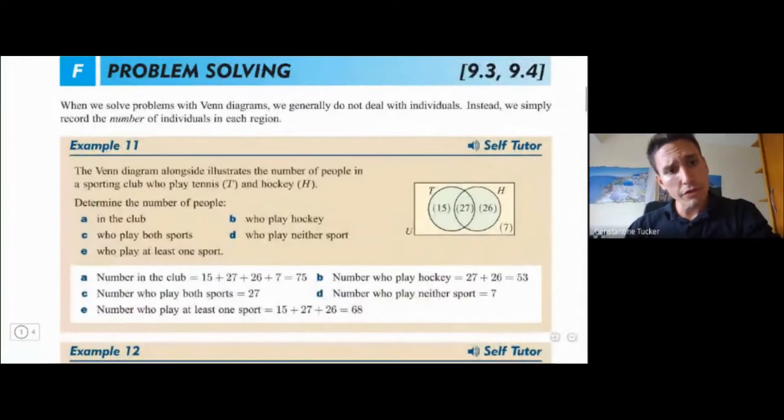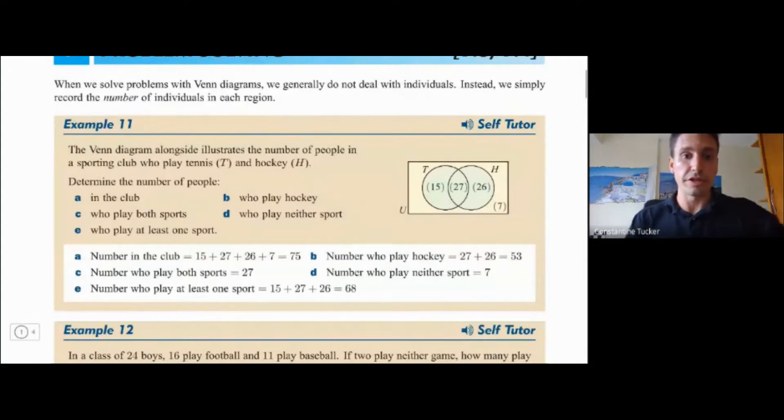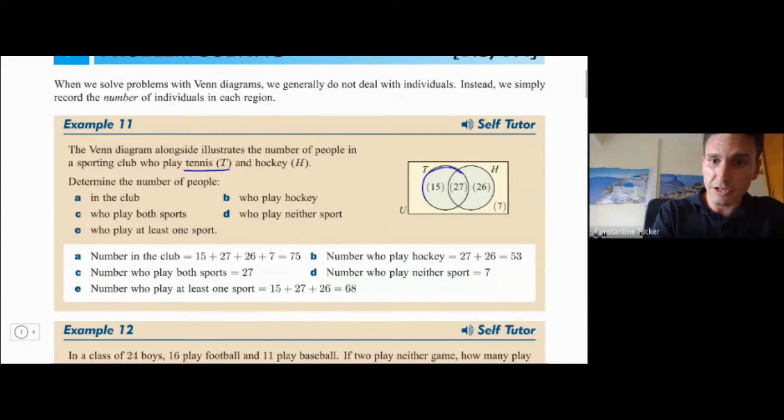So here for example it says we've got a Venn diagram here. It illustrates the number of people in a sporting club who play tennis and hockey. So normally if you are asked to create the Venn diagram yourself you should do something like this. This is tennis so I will draw a circle for tennis and then the other one is hockey so I would draw another circle for hockey and I would put all of this stuff into a Venn diagram.